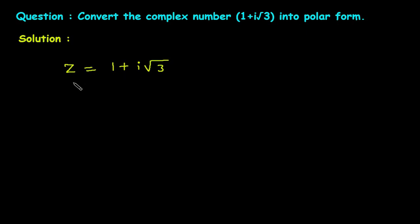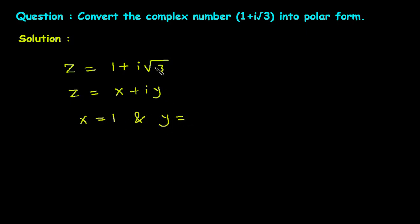Now we can compare this equation with z is equal to x plus i y. Here we can see x is equal to 1 and y is equal to root 3. This x is the real part and y is the imaginary part, so 1 is the real part and root 3 is the imaginary part.